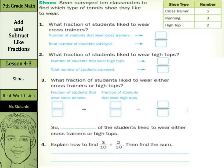As we look at our real-world link on shoes, Sean surveyed 10 classmates to find which type of tennis shoe they like to wear. What fraction of students liked to wear cross trainers? To do that, the number of students that wear cross trainers in our table is 5, so we're going to write a 5.